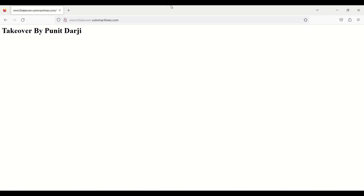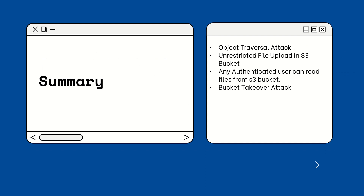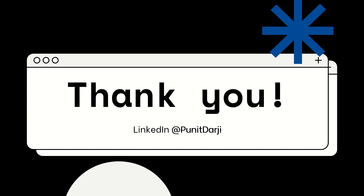So these are the four S3 bucket attacks covered in this video. First is the object traversal attack where we simply read a file. Second is the file upload attack where we uploaded index2.html. Third is any authenticated user reading from a misconfigured bucket — our non-associated AWS account could still read the file. Fourth is the bucket takeover attack. This is all from my side — thank you guys for watching.